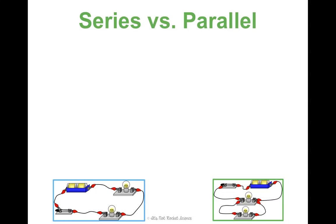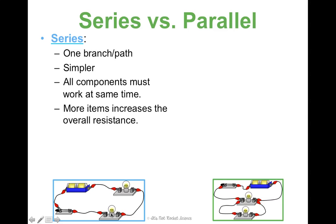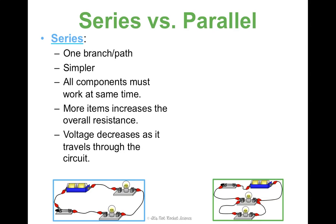A few more differences between these — and by a few, I mean a lot. Series circuits are one branch or one path — they're much simpler. The problem with the simplicity, though, is that all of the components must work at the same time. So if this light bulb is on, this one has to be on; if this one's off, this one's going to be off too. Also, the more items you add to a series circuit, there's a greater overall resistance because there's more for the electrons to travel through. What's interesting is that voltage decreases as it travels through the circuit. Current, though, stays the same throughout.